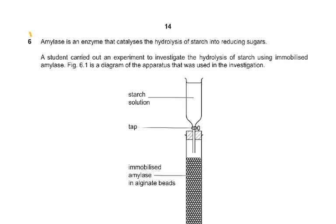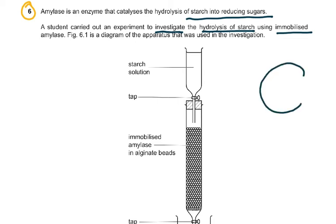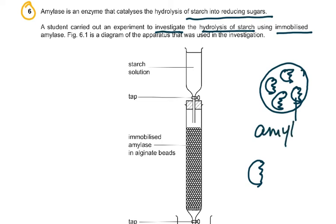Now coming to the last question — question six — which is still in the syllabus: immobilized enzymes. Amylase is an enzyme that catalyzes the hydrolysis of starch into reducing sugars — starch to maltose, and maltose is a reducing sugar. A student carried out an experiment to investigate the hydrolysis of starch using immobilized enzymes. Immobilized enzymes means you have glass beads and the enzymes are actually fixed onto them, not loose in solution.